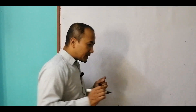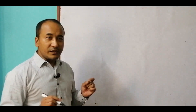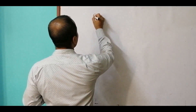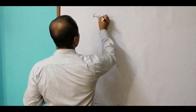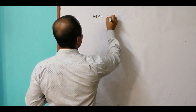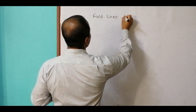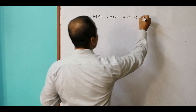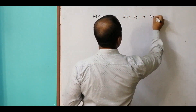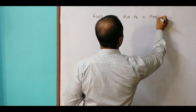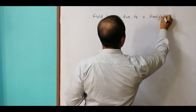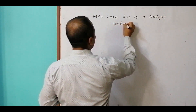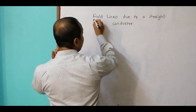That item is the drawing of field lines of a straight conductor. So our topic will be magnetic field lines due to a straight conductor which is carrying current.